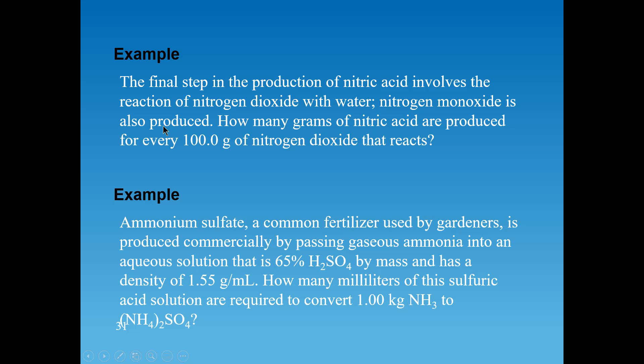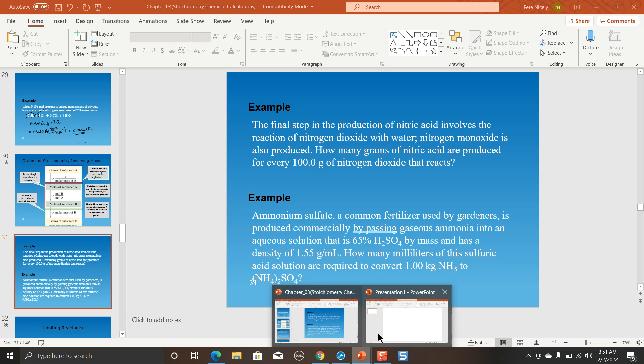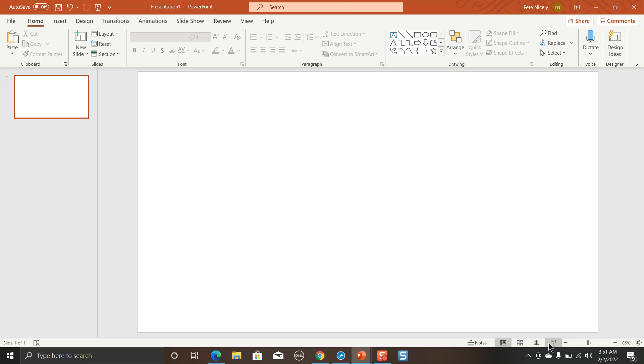And then it says nitrogen monoxide is also produced. So that's another product. So basically, the reaction involves nitrogen dioxide reacting with water and the products would be nitric acid and nitrogen monoxide. So what I'm going to do is get out of this and pull up another PowerPoint blank slide so I can write on this. And I'm going to write down the unbalanced equation, which would be NO2 plus H2O to give HNO3 and NO.